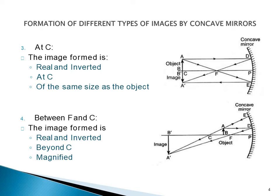The fourth case is when we keep the object between the focus and the center of curvature. In this case also, the image formed is real and inverted. It is magnified and it is formed beyond the center of curvature.